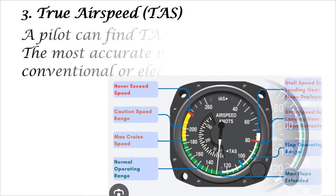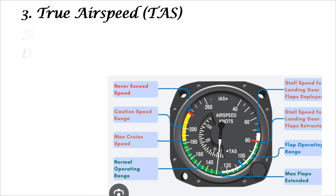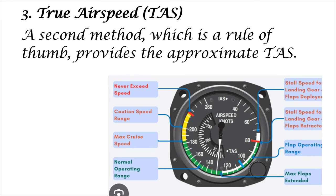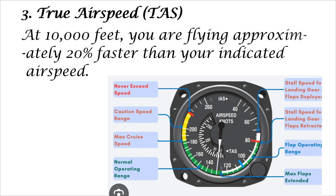A pilot can find TAS by two methods. The most accurate method is to use a conventional or electronic flight computer. A second method, which is a rule of thumb, provides the approximate TAS: simply add 2% to the CAS for each 1,000 feet of altitude. At 10,000 feet, you are flying approximately 20% faster than your CAS.